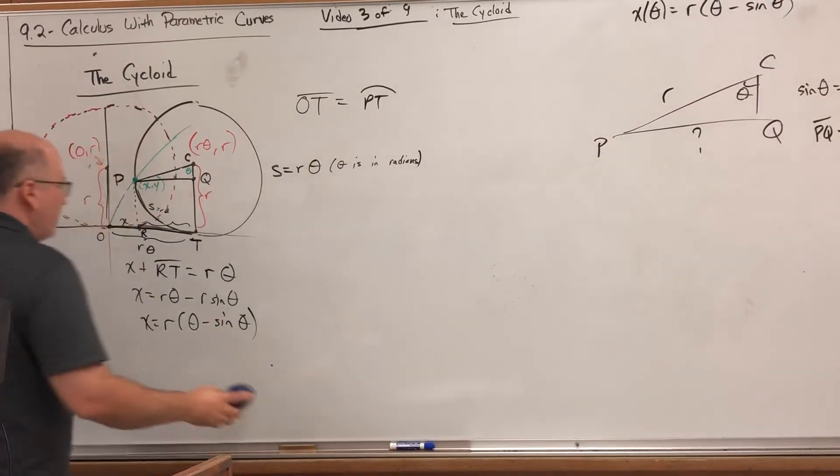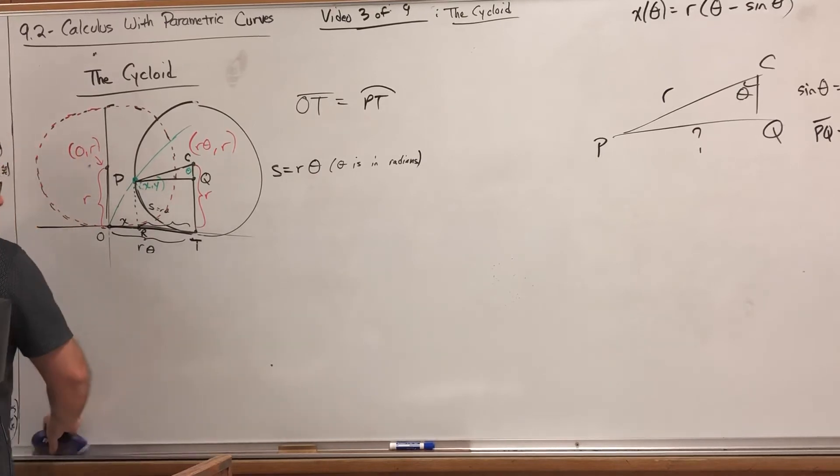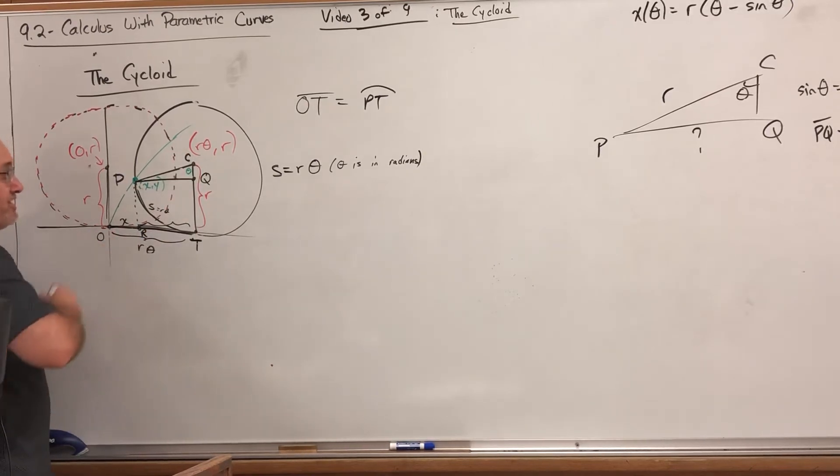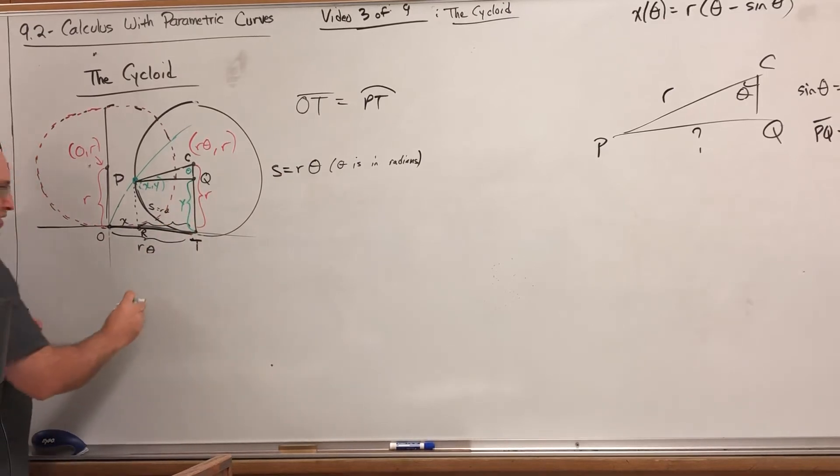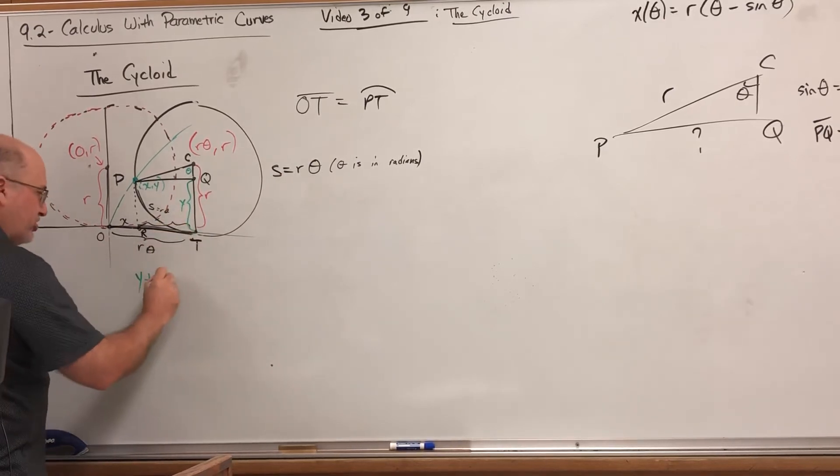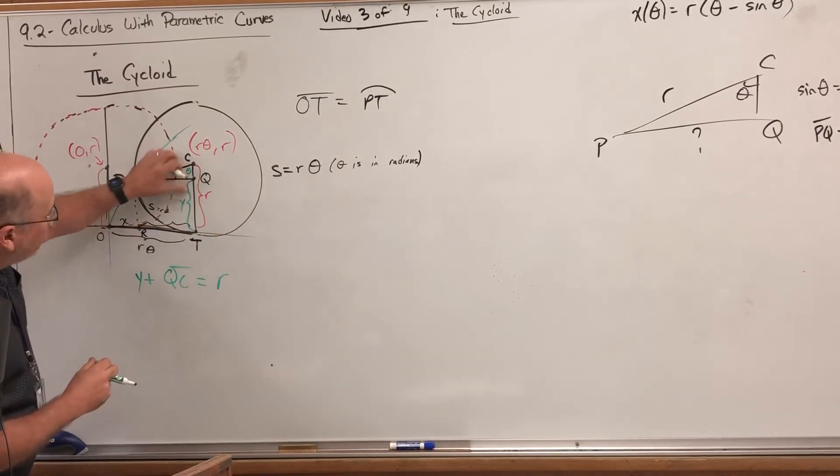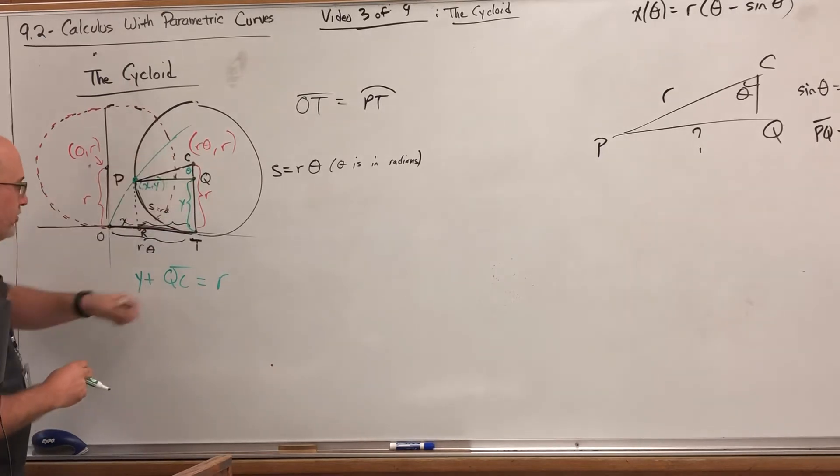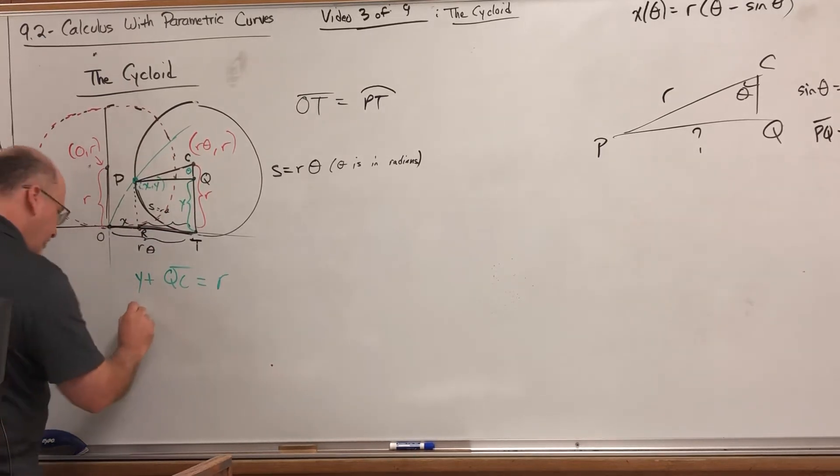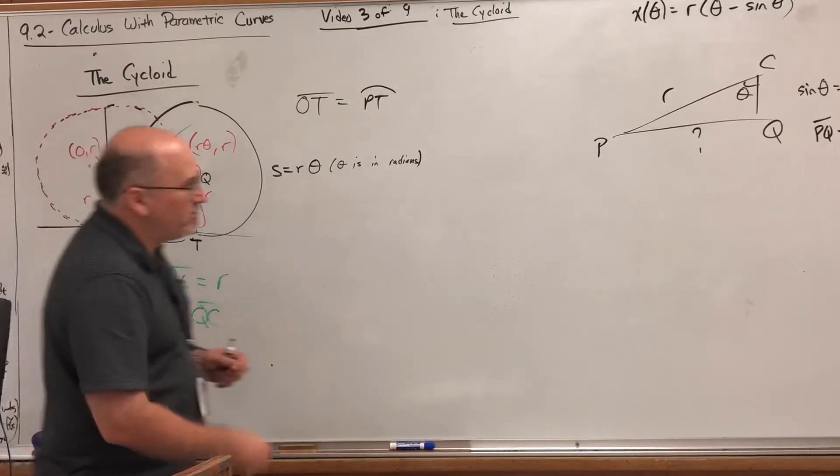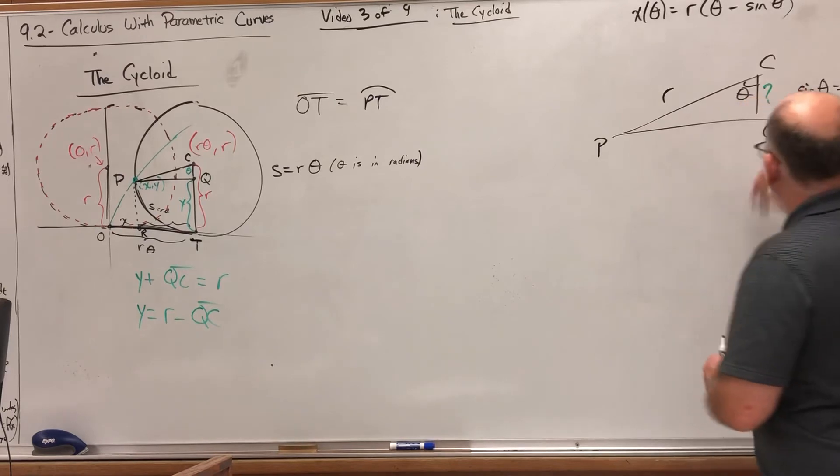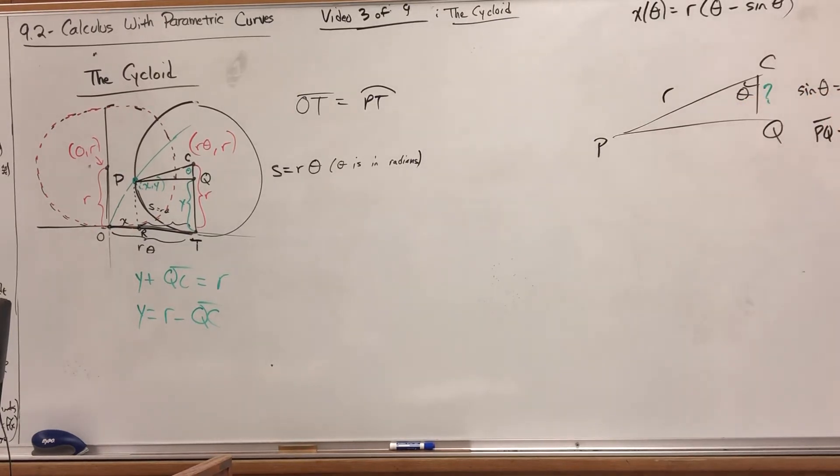A little weird—normally x is associated with cosine, but that's okay. What about the y-coordinate? For the y-coordinate of this point, let's look at segment QC. The y-coordinate we're looking for is here, and we know that y plus the segment QC should be r. In other words, this piece plus this piece should be that piece.